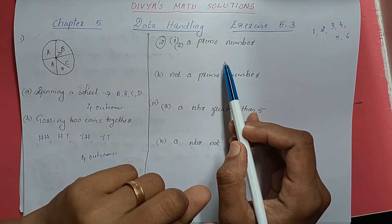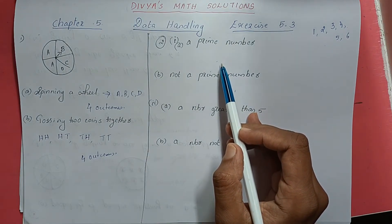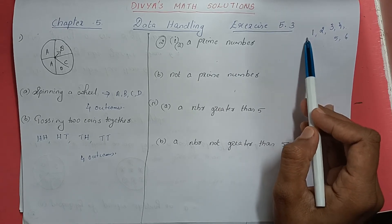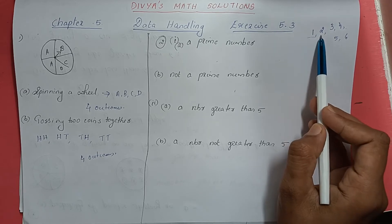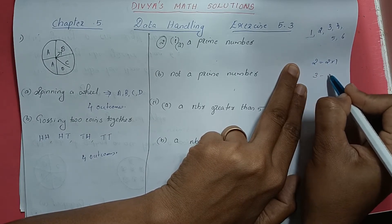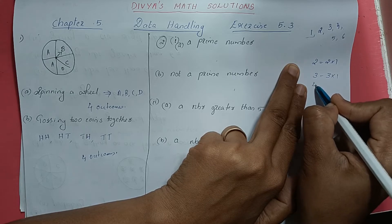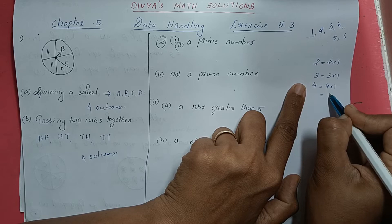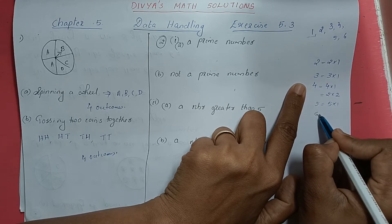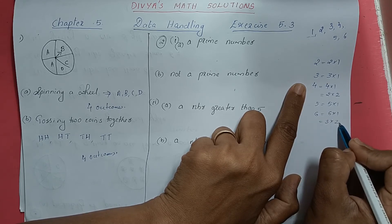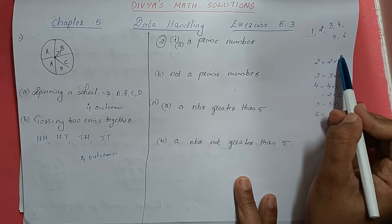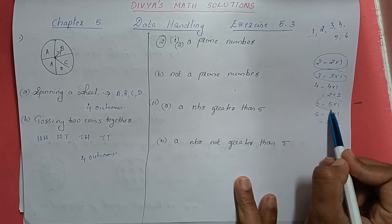What is a prime number? A number which has only that number and 1 as a factor is called a prime number. 1 is not a prime number and not a composite number — it stands independently. Factors of 2 are 2×1. Factors of 3 are 3×1. Factors of 4 are 4×1 and 2×2. Factors of 5 are 5×1 only. Factors of 6 are 6×1 and 3×2. So the numbers having only themselves and 1 as factors are: 2, 3, and 5 — these are the prime numbers.